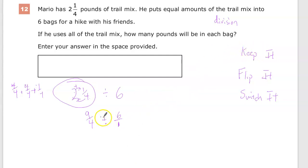So the first step is keep it, so I'll just keep this one. I'm just going to bring it down, leave it as it is. Then I'm going to flip it, which means I'm going to flip the second one. And then finally, I'm going to switch it. I'm going to switch this terrible dividing sign into a multiply, or the dot, or whatever you'd rather do here. And then I can solve.